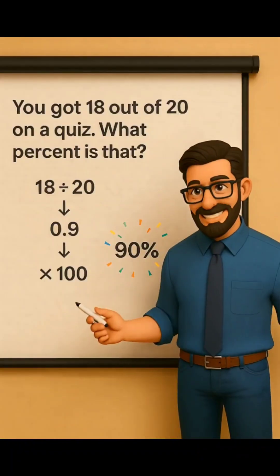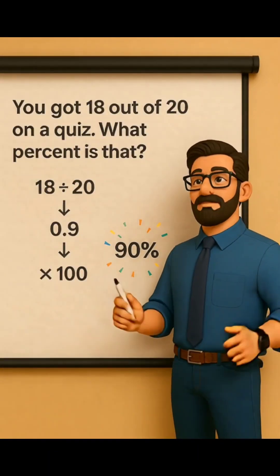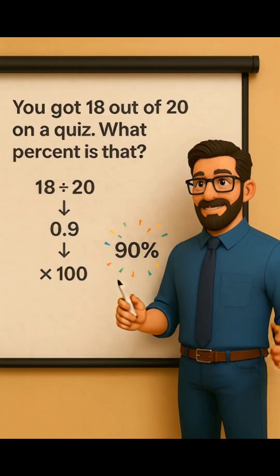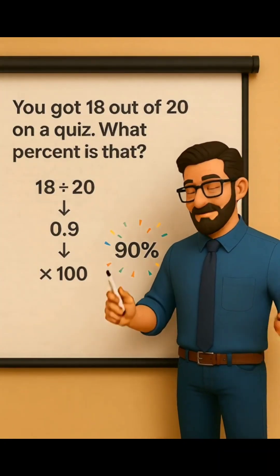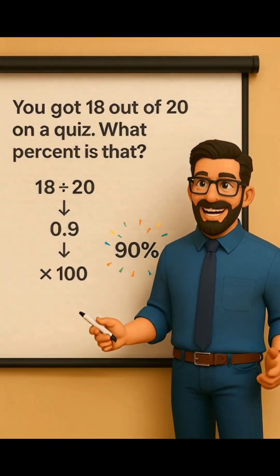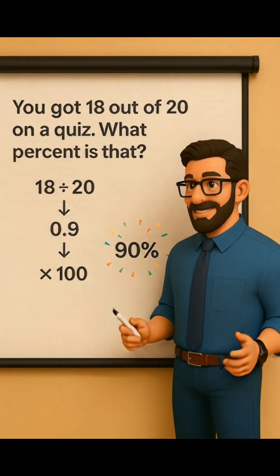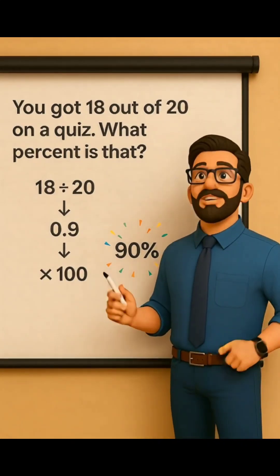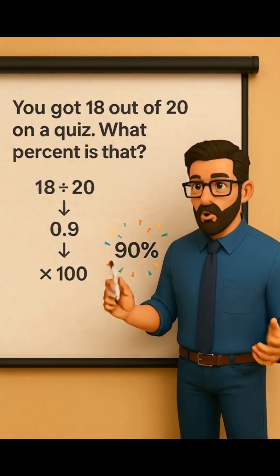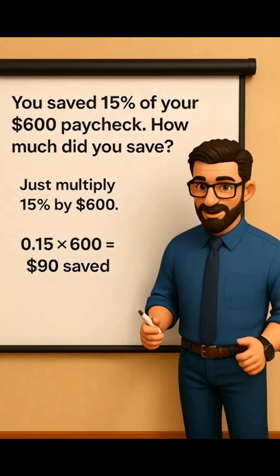Isn't that easy as pie? In this example, a student got 18 out of 20 on a quiz. What percent is that? Just divide 18 by 20, which equals 0.9. Now multiply by 100 to convert to percent: 0.9 times 100 is 90. So the student's score in percent form is 90%.